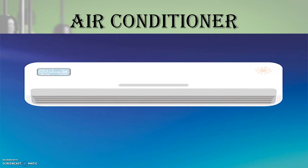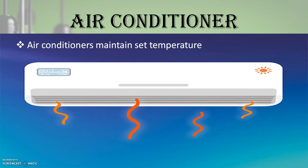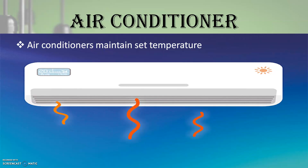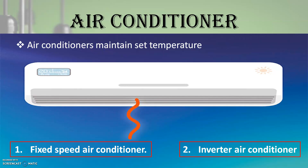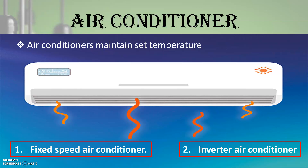Coming to an air conditioner — an air conditioner maintains a set temperature by cooling when the room temperature rises above the set temperature and heating when the room temperature falls below it. There are two main categories of air conditioners available in the market today: the inverter air conditioner and the fixed speed air conditioner. It is important to know the benefits and capacities of both before you make a purchase.